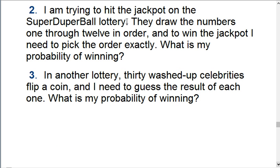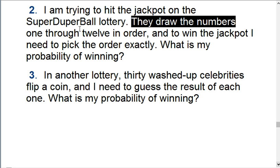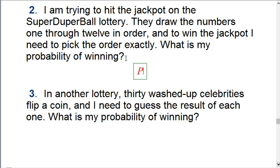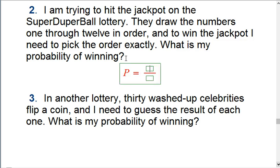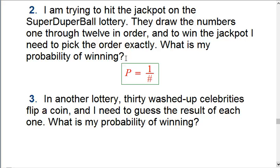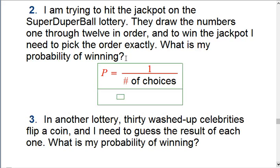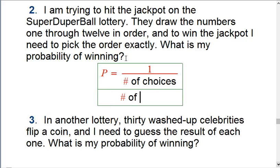So a lottery problem. Suppose for this super-duper ball lottery, they draw the numbers 1 through 12 in order. And to win, I have to pick the order exactly. So what's the probability winning? So I often like to just go straight to probability questions. The reason that's very similar to a counting question is that in this case, there's only one winning order out of all the different orders. So it's just going to be 1 over the number of orders. So the probability is going to be 1 over the number of choices.